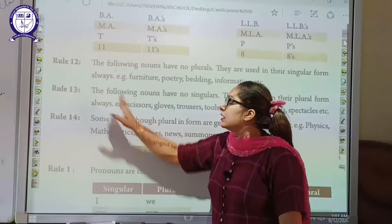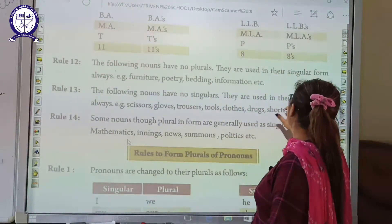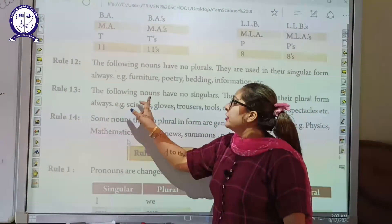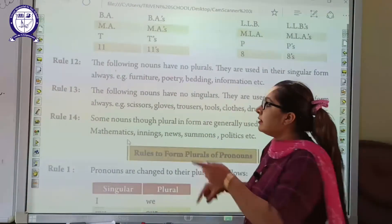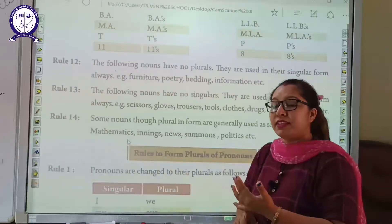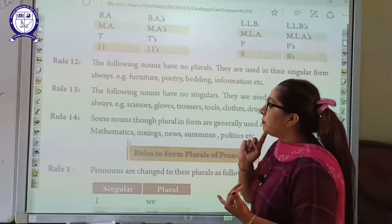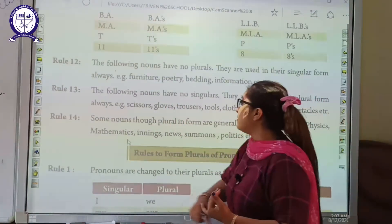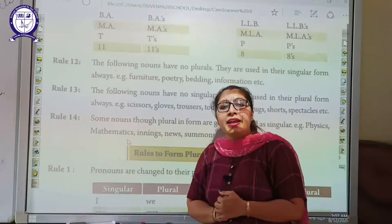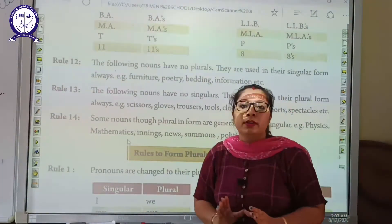Rule number 13: The following nouns have no singular — they are always used in their plural form. These words don't have singular forms; they always appear as plurals. Examples include words like 'scissors' and 'gloves.' This type of word will remain in plural form and will not be used in the singular form.